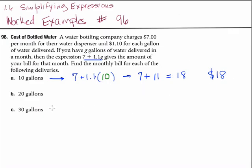The second family still gets the water dispenser delivered, and their charges are still $1.10 per gallon. But the number of gallons they have delivered is 20. So this problem becomes 7 plus 1.1 times 20 is 22. 7 plus 22 is 29. This family's bill will be $29 for the month.